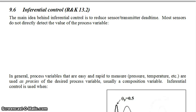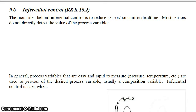We will now talk about another advanced control method called inferential control. Inferential control is essentially just using a model to make one of your measurements a proxy for another measurement. The main reason why you would use inferential control is that the thing you really want to measure is really hard to measure, or measuring it has associated with it a large sensor transmitter dead time. So the idea for inferential control is to reduce this dead time.